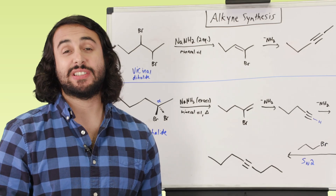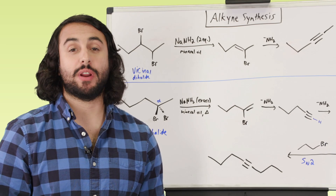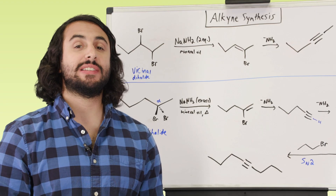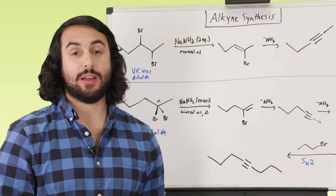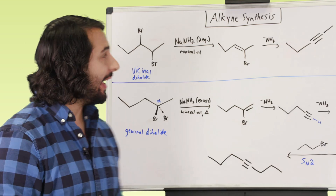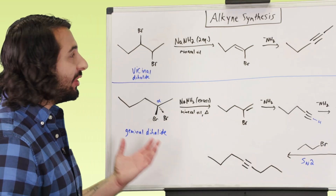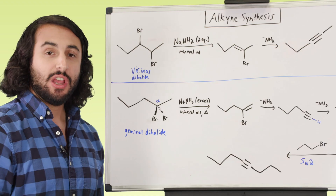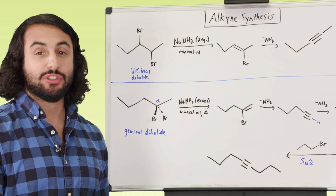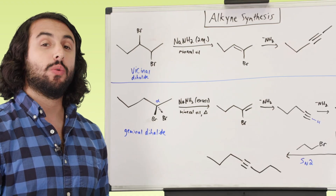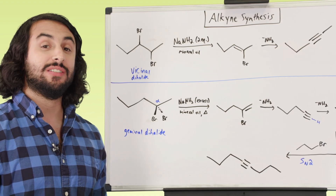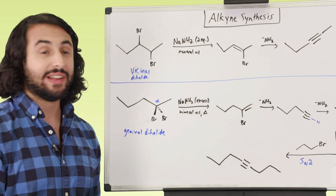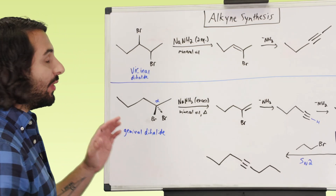So when we're doing synthesis, we may for whatever reason want to make an alkyne. So let's look at one way that we can make alkynes. It's not really any new chemistry — we're just going to be doing E2 reactions. We already know how to do dehydrohalogenation, so we can use a double dehydrohalogenation. We can basically do this twice on a dihalide.